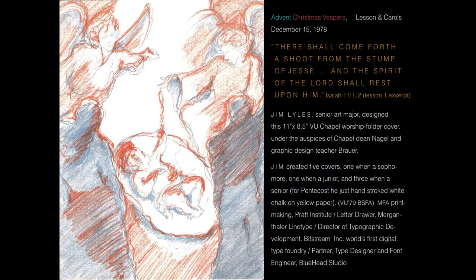'There shall come forth a shoot from the stump of Jesse, and the Spirit of the Lord shall rest upon him.' The foliage doubles as angels, and the blue background represents Mary and Joseph.